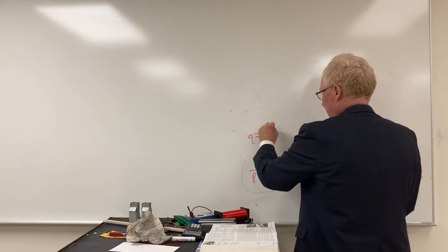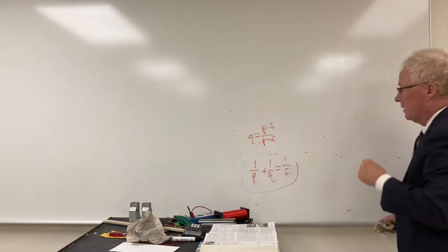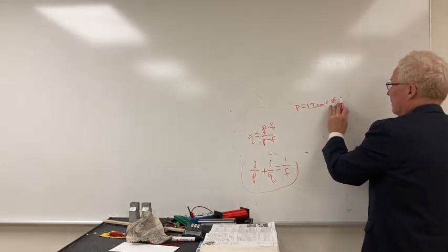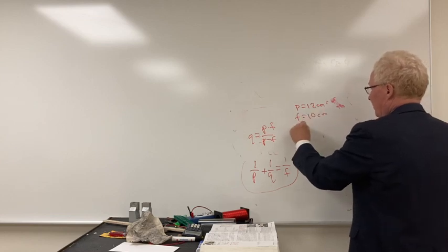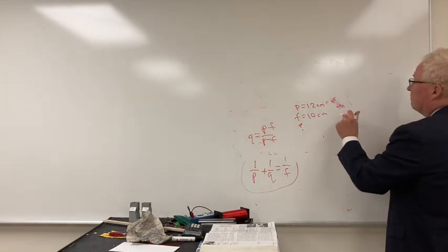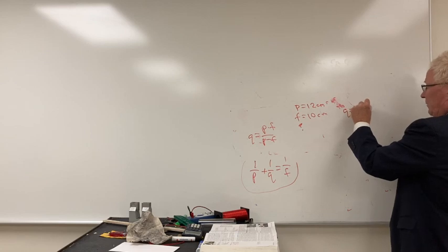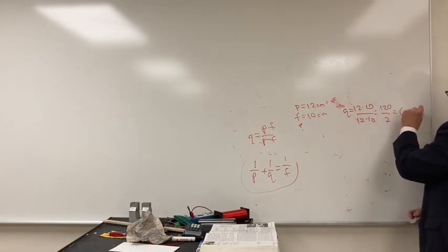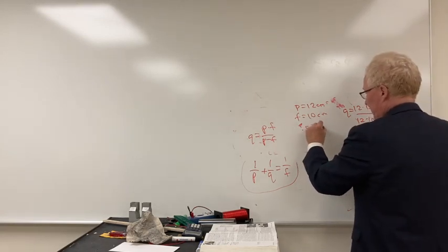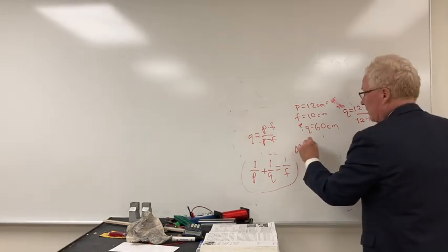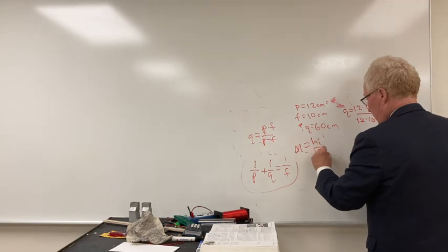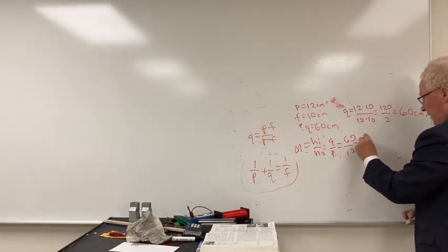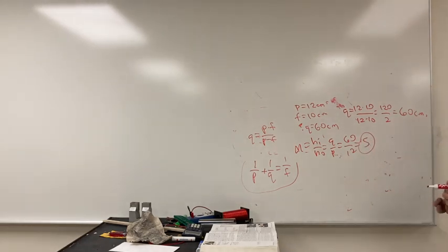Let's do another example where q is p times f over (p minus f). Say p is 12 centimeters and f is 10 centimeters. That would be 12 times 10 over (12 minus 10), which is 120 over 2, giving q equal to 60 centimeters — way out there. The magnification would be q over p, which is 60 over 12, equal to 5 times. So it would be 5 times larger.